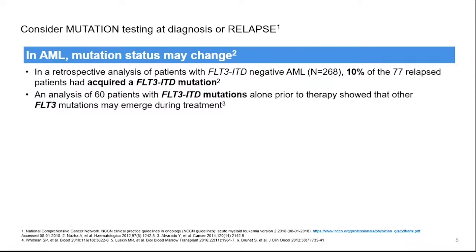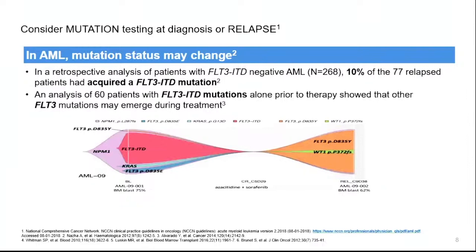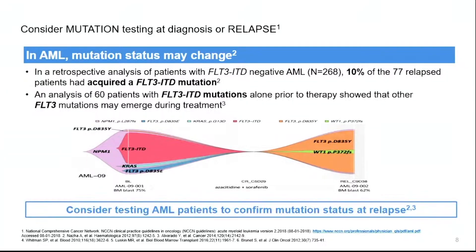In one retrospective study, around 260 patients with FLT3-negative AML — 10% relapsed with acquired FLT3 ITD mutation. Conversely, around 60 patients with FLT3 ITD mutation prior to therapy relapsed without FLT3 mutation. In nice work by Dr. Takahashi from MD Anderson using single-cell analysis, you can see how the clone changed with treatment. A patient with NPM1 mutation had FLT3 ITD as the main clone at diagnosis, treated with sorafenib and achieved remission; upon relapse, the FLT3 ITD disappeared and the main clone was FLT3 TKD — which makes sense since sorafenib doesn't affect FLT3 TKD. The key message: when you have relapsed AML, you must test for mutations, especially FLT3 and others with targeted therapies available.